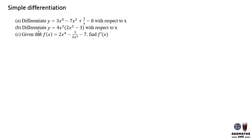Simple differentiation. In this part, we are trying to solve a very simple differentiation where we have a x to the power of b. To differentiate this, first we write dy/dx since we have y and x. To differentiate, first bring this power times the front — so a times the power — with the power of minus 1.